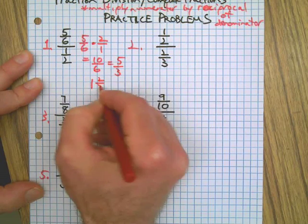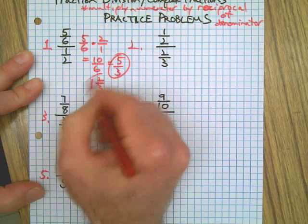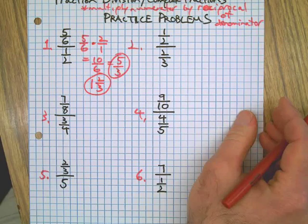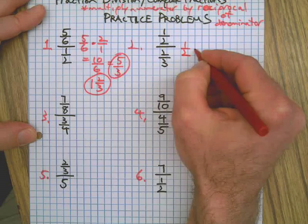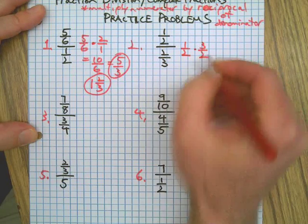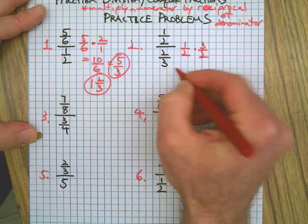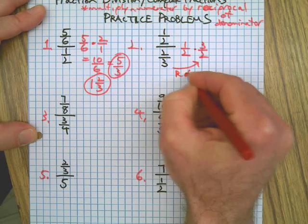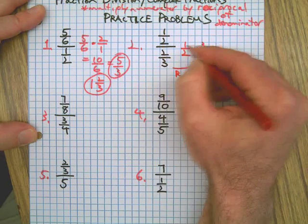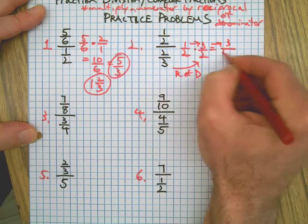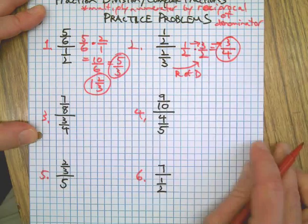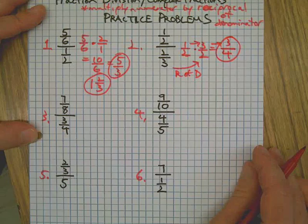Number two: 1/2 is the numerator, 3/2 is the reciprocal of the denominator. So we multiply straight across. 1 times 3 is 3, 2 times 2 is 4. The answer is 3/4. That is already simplified; we cannot reduce that any further.